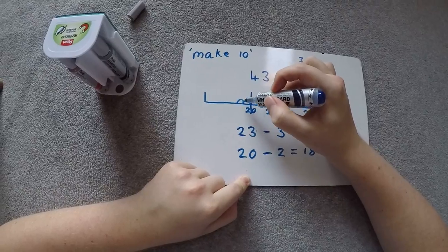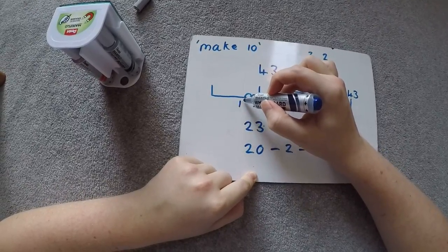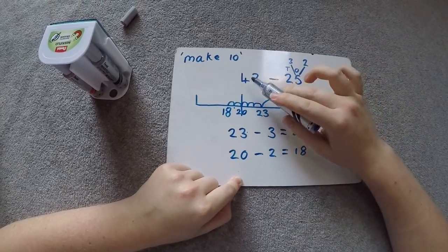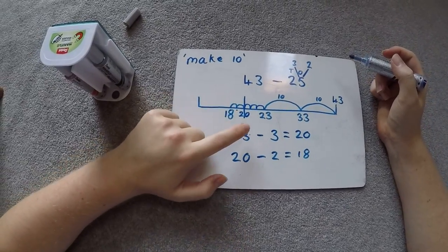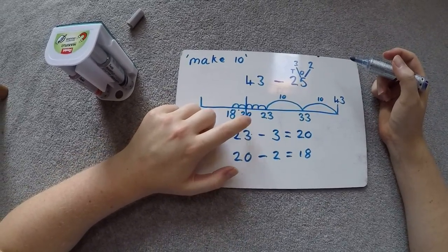Or counting back on our number line, 20, 19, 18. So our answer to 43 take away 25 is 18. But it's all about getting back to those multiples of 10.